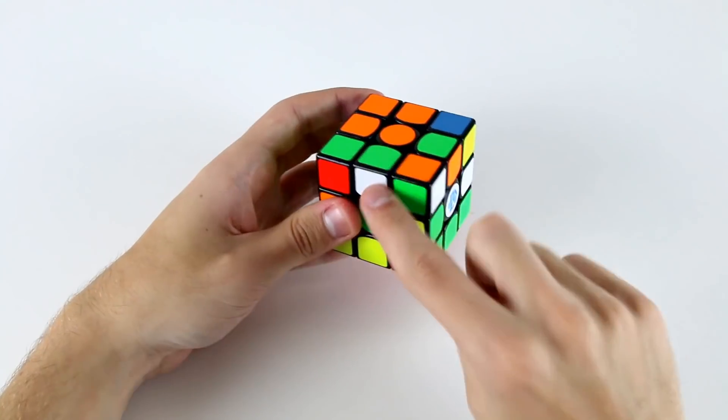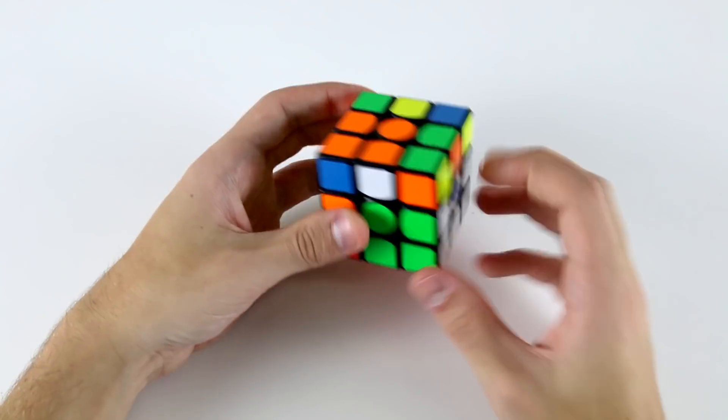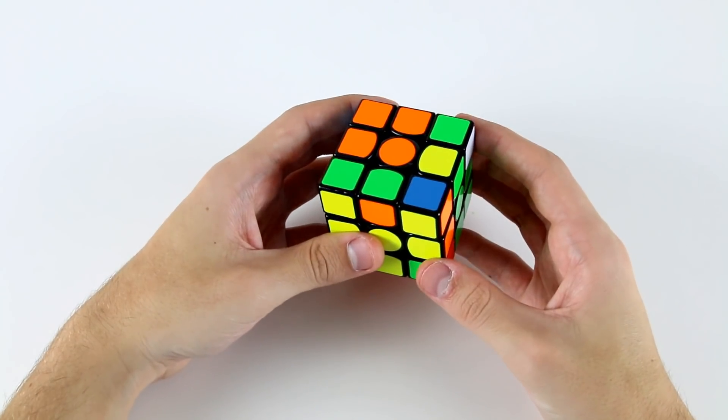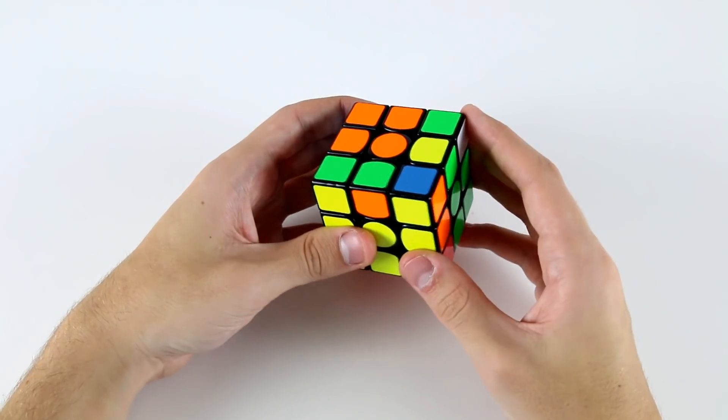And I can just insert this edge such that now when I do a D' both the corner and edge will be solved because this corner was already solved, doing a D just moves it out of the way, inserting that edge doesn't affect this corner and then doing a D' resolves them both. So that's kind of a really really fast way to handle a case like that, that was only five moves.